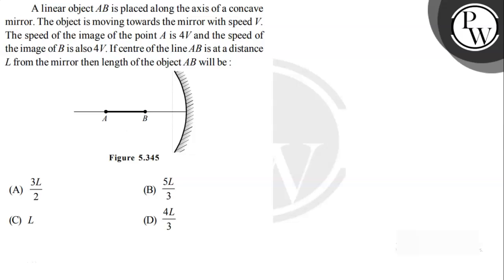Let's read the given question. A linear object AB is placed along the axis of a concave mirror. The object is moving towards the mirror with speed V. The speed of the image of point A is 4V and the speed of the image of B is also 4V. If the center of the line AB is at a distance L from the mirror, then the length of the object AB will be. So basically, we have to find the length of object AB.